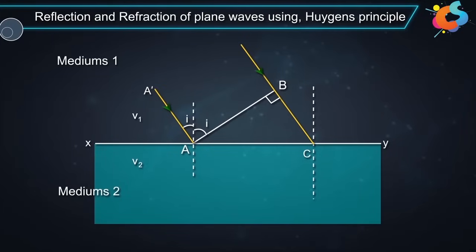at the point C in a time tau. Then BC is equal to V1 tau.